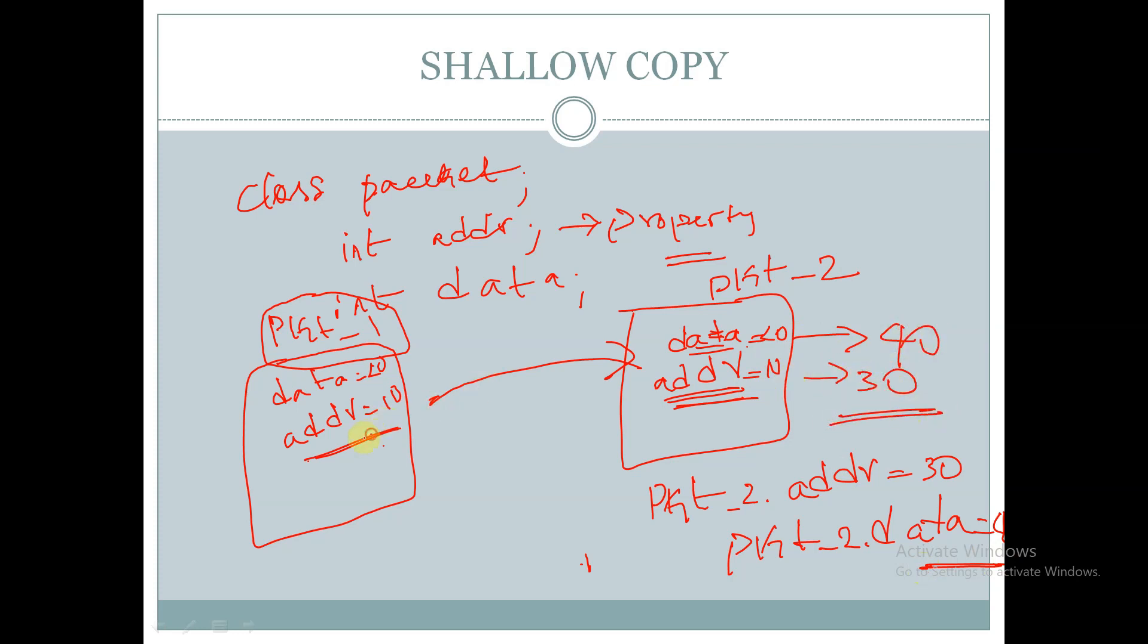But these changes are not reflected in pkt1 handle. pkt1.data will be equal to 20 itself and the address will be equal to 10 itself. So if any changes are made to addr and data using the pkt2 handle, these changes are not reflected in pkt1.